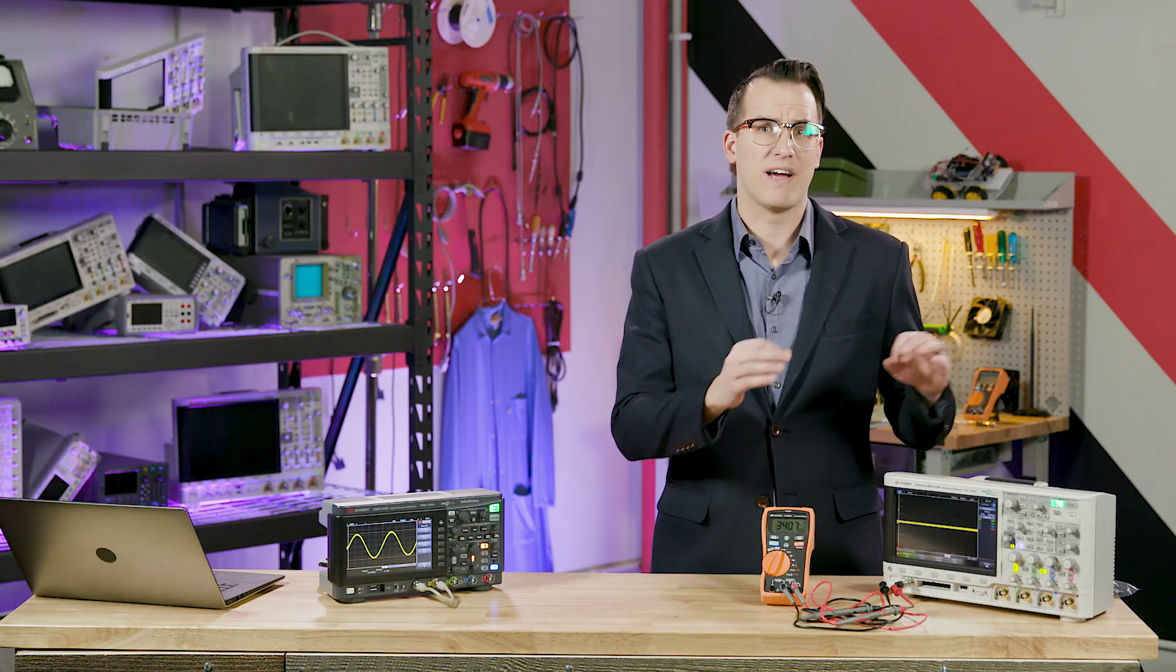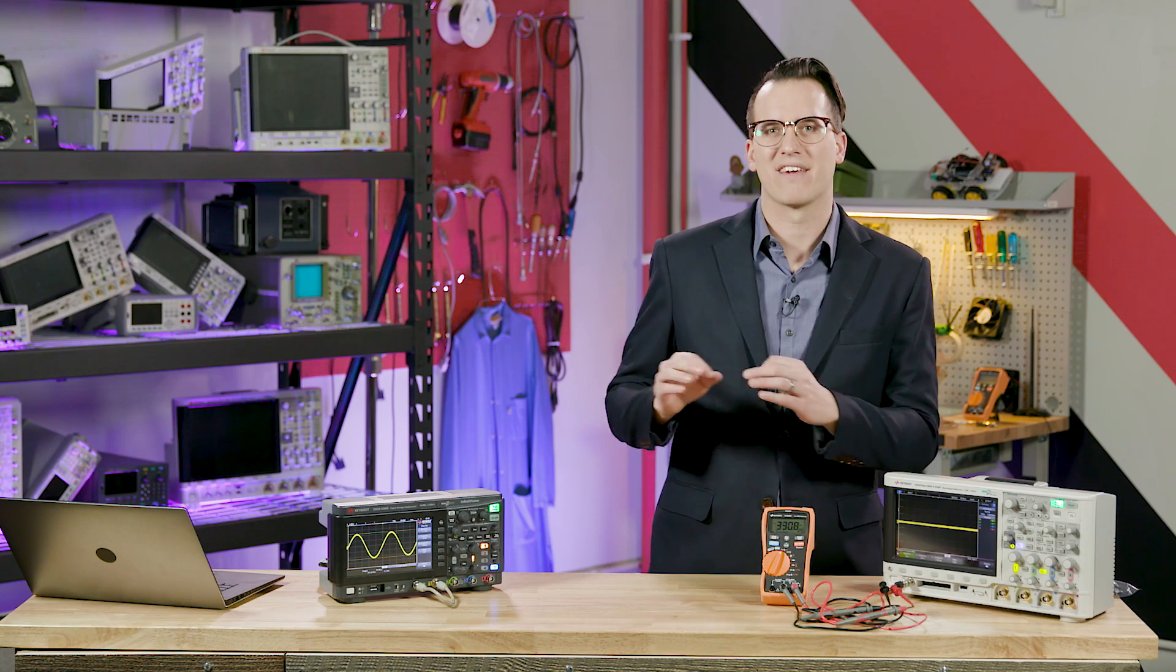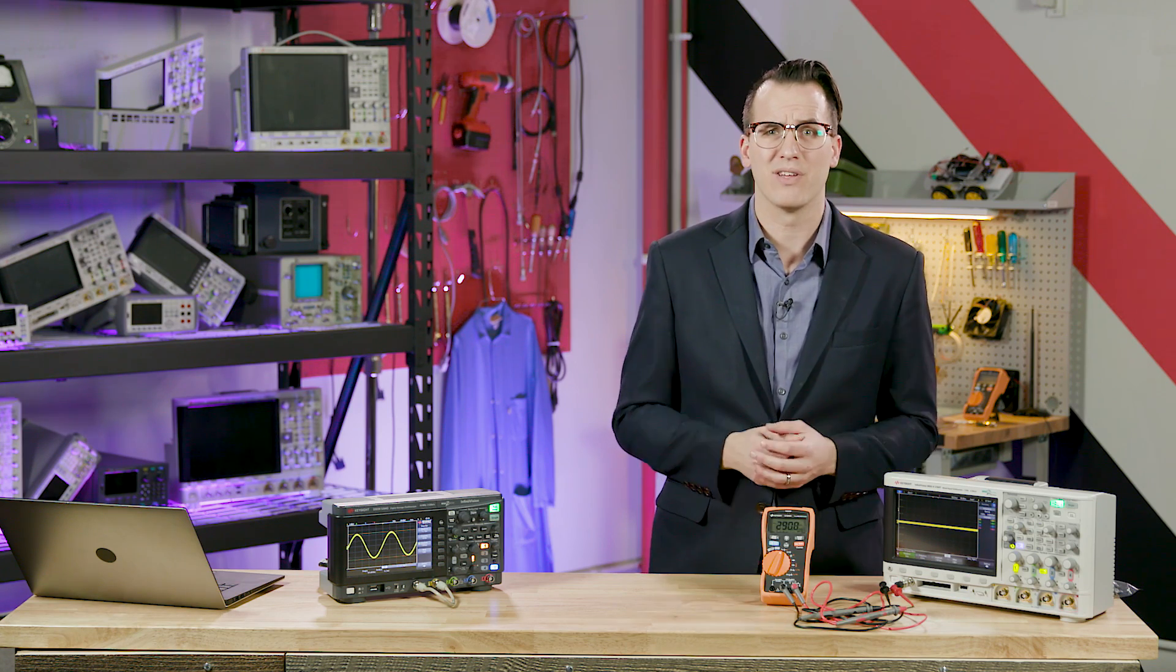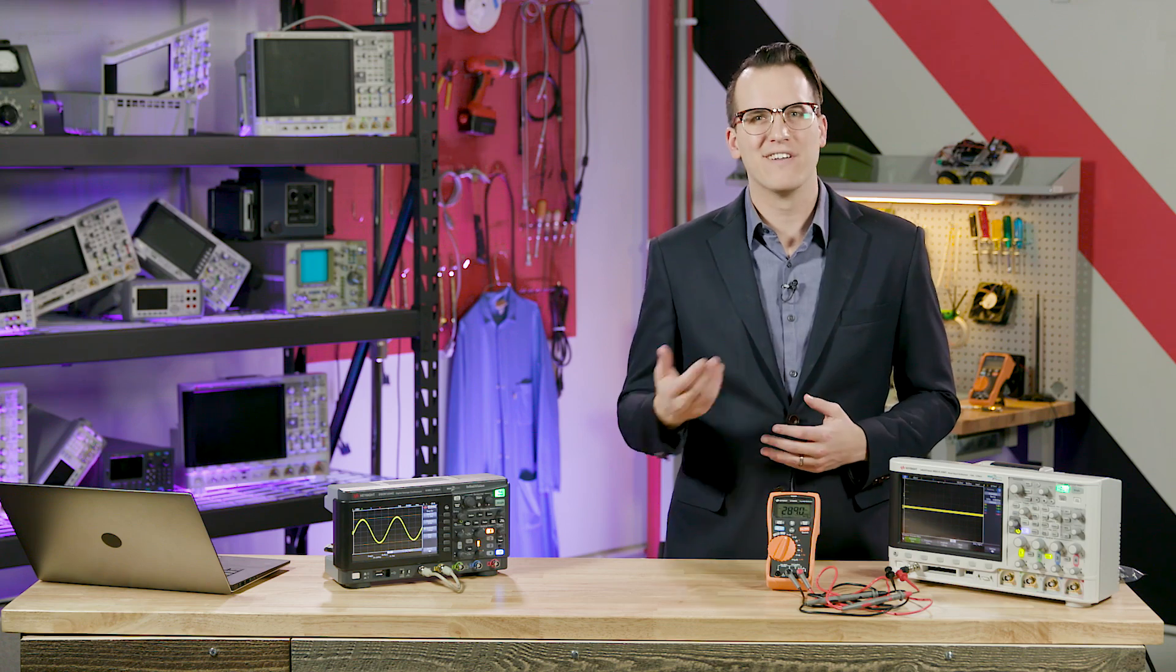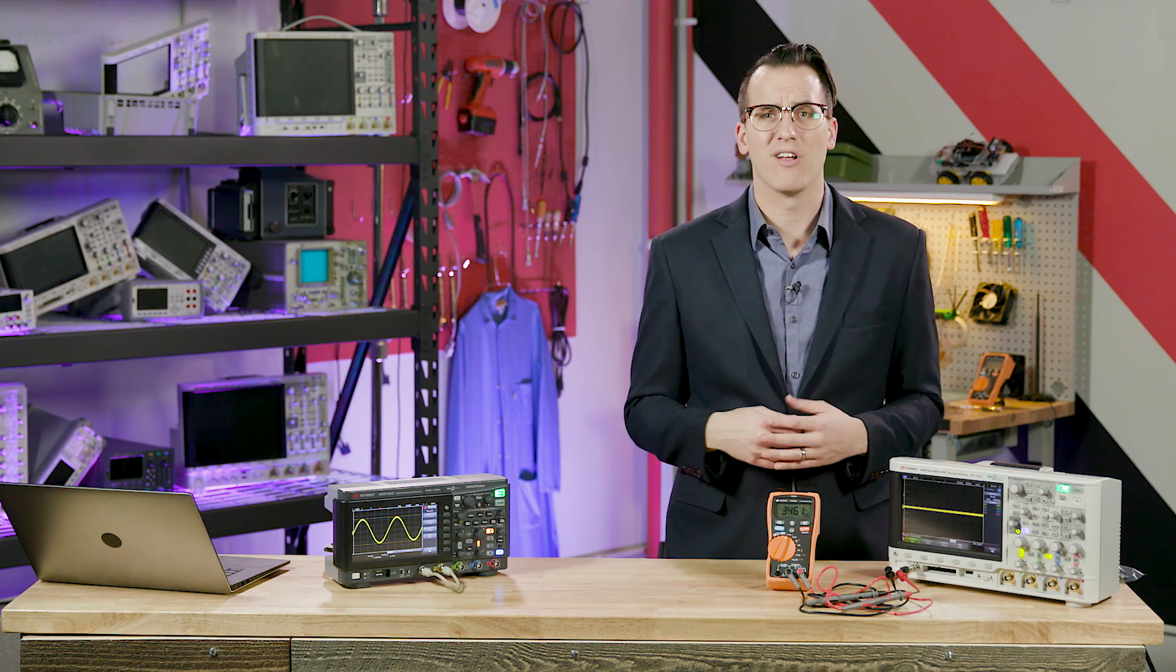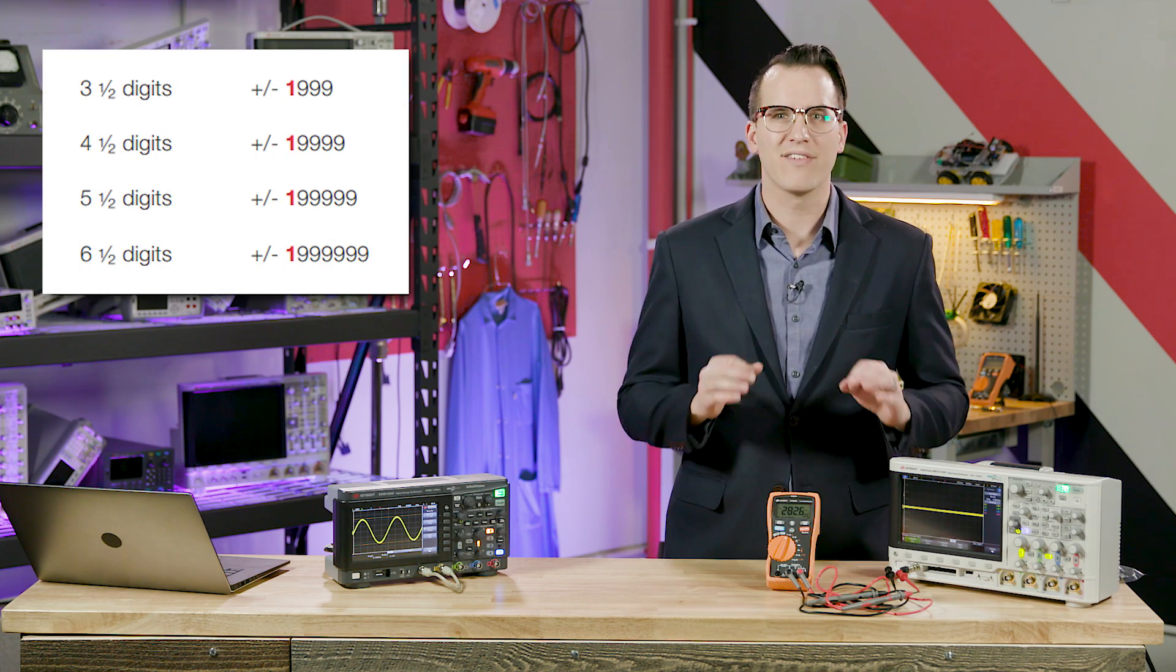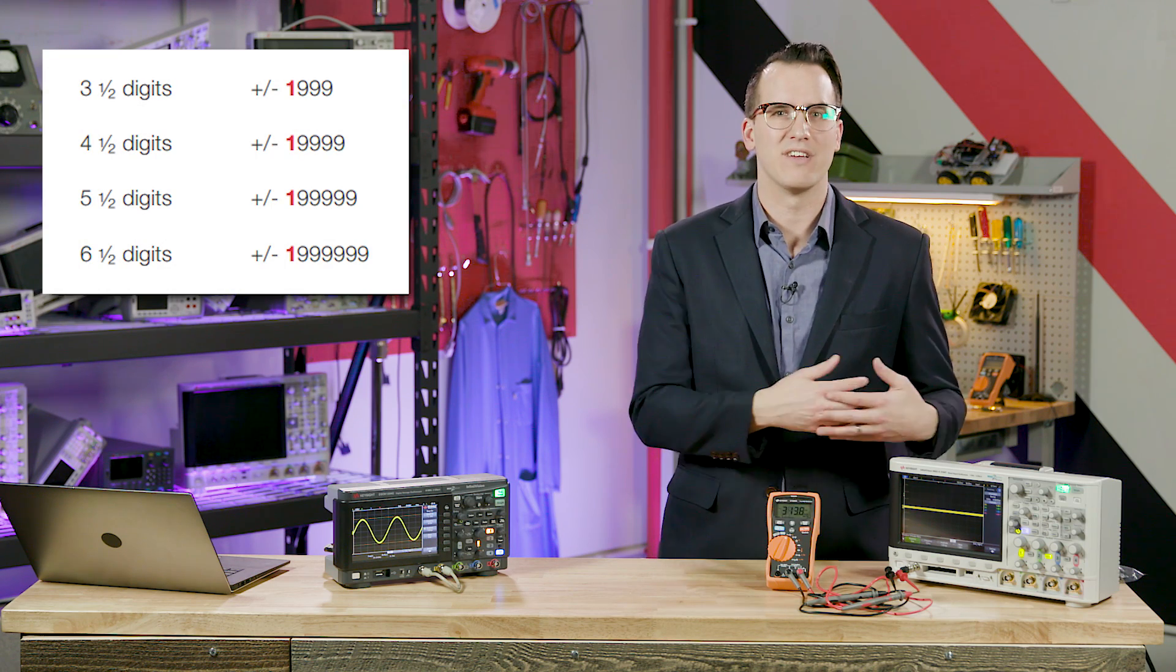Sometimes, though, instead of it being specified as digits, you'll see it specified as counts. So why would you use one or the other, and how do you convert between the two? Well, they both spec the resolution of a DMM, and the difference is really just verbiage, but it can be very confusing. The confusion often lies in the fact that, and this is really important, not all digits on a DMM go from 0 to 9. Often, the leading digit can't go any higher than 1, and sometimes it can go no higher than 3 or 5, and this is due to the internal architecture of a DMM.